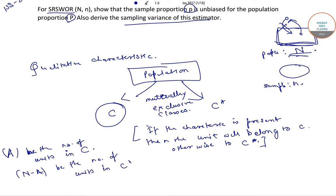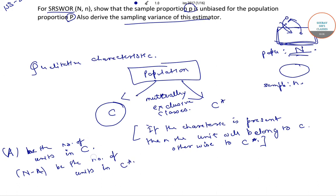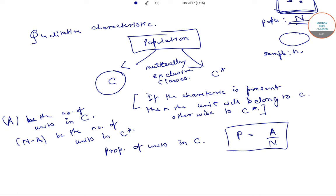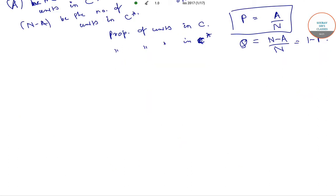The proportion of units in C, denoted by capital P, is equal to capital A by N. The proportion of units in C star, denoted by Q, is equal to N minus A by N, which equals 1 minus P.